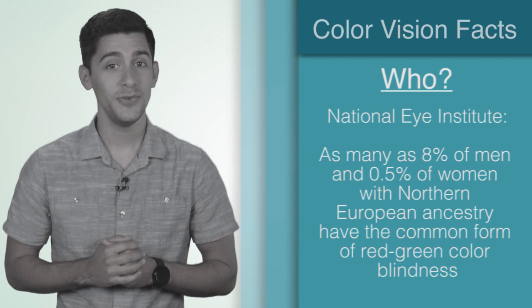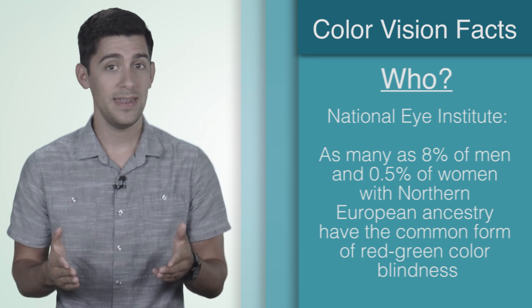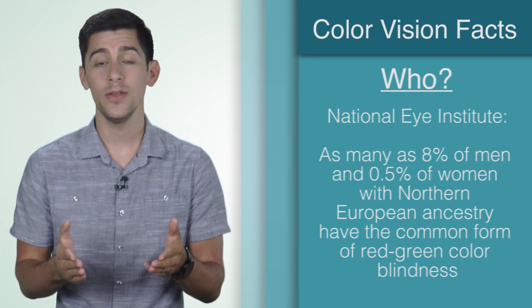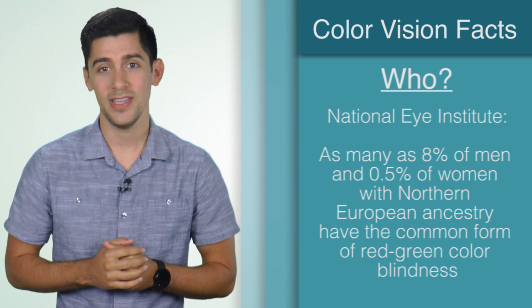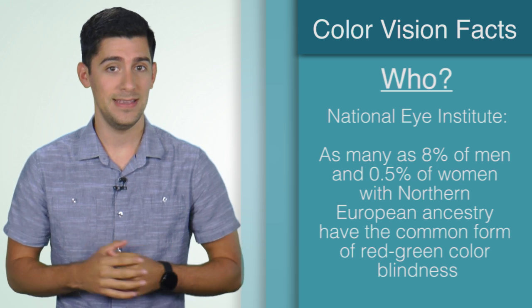According to the National Eye Institute, as many as 8% of men and 0.5% of women with Northern European ancestry have the common form of red-green colorblindness.